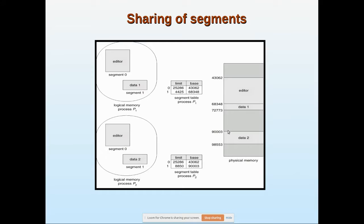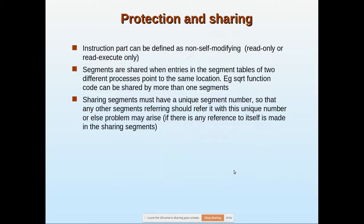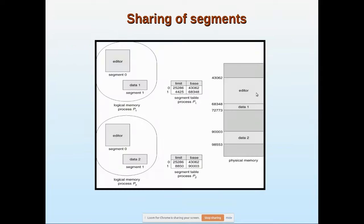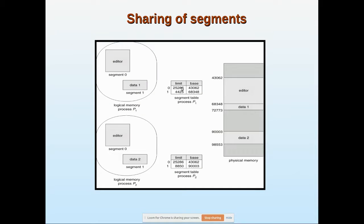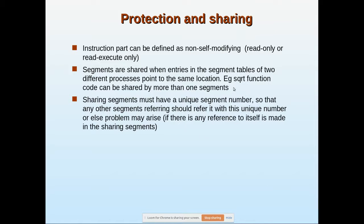That's what we have seen here. Instruction part can be defined as non-self-modifying. In this case, this can be called as non-self-modifying shared process. Segments are shared when entries in the segment tables of two different processes point to the same location. That's what both this point to the same location. Example: squared function code can be shared by more than one segment.